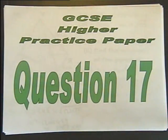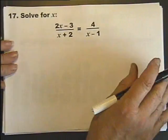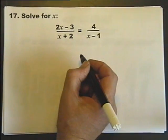GCSE Higher Practice Paper 1B, Question number 17: Solve for x. Find out what x is.